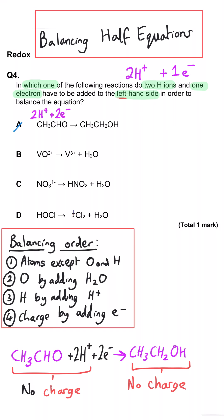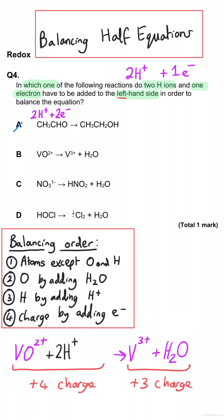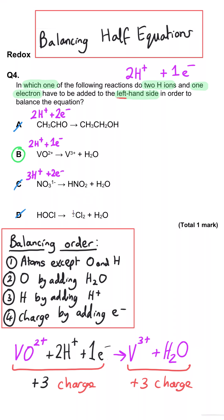In B, we need to add two hydrogen ions to the left-hand side to balance the hydrogen atoms. The charge is currently plus 4 on the left and plus 3 on the right, so one electron will balance this — B is the correct answer. In C, we need three hydrogen ions and two electrons, and in D we need one hydrogen ion and one electron.